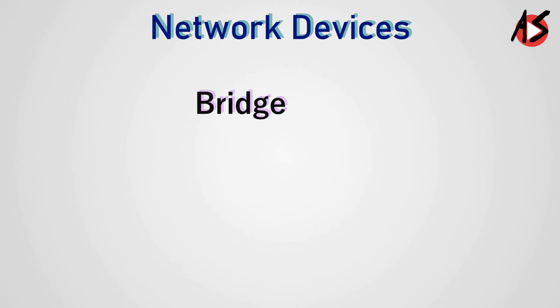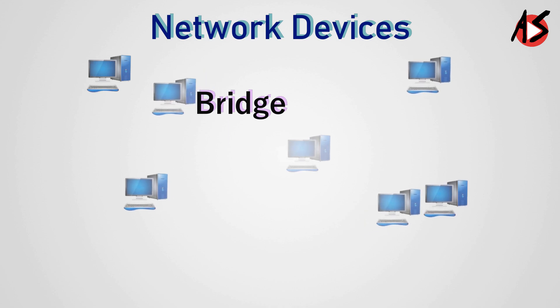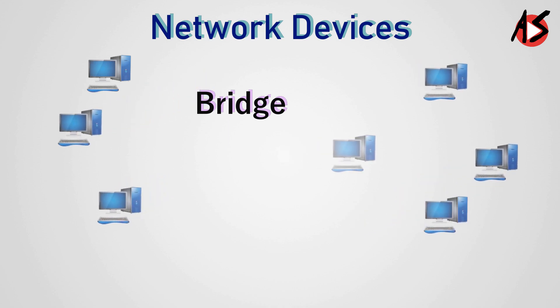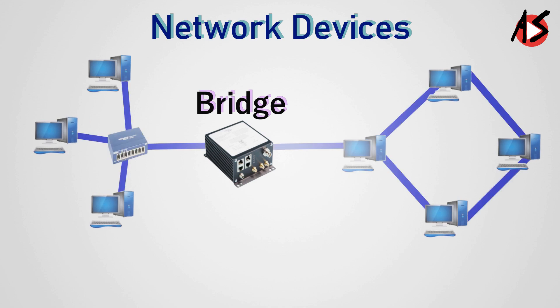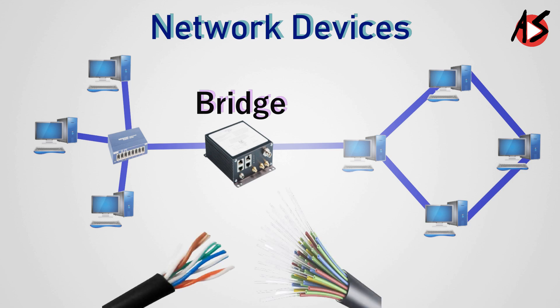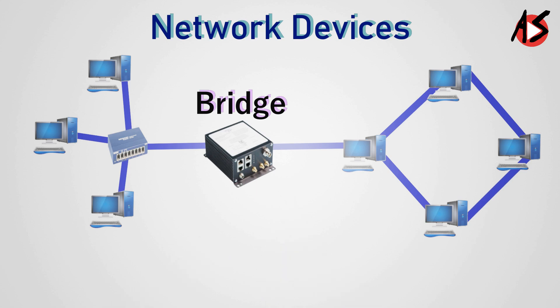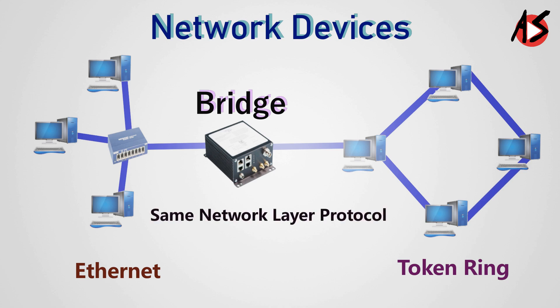Bridge. Bridge is used to divide a large network into smaller networks. Bridge can connect different media types such as UTP with fiber optic. It also connects different network architectures such as Ethernet with token ring. The limitation of a bridge is it cannot connect two different types of network layer protocols. That means a bridge requires the same network layer protocol in all smaller networks.